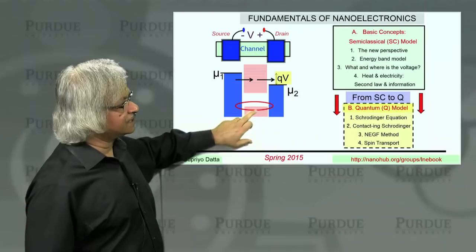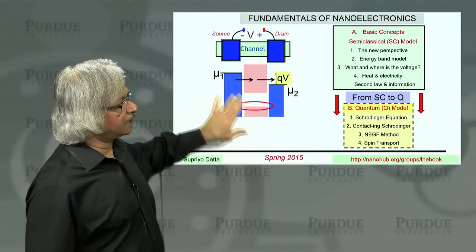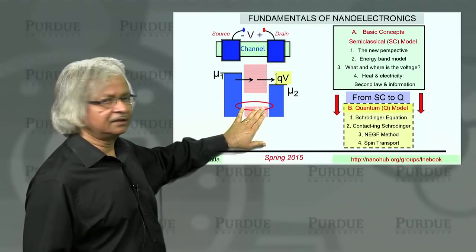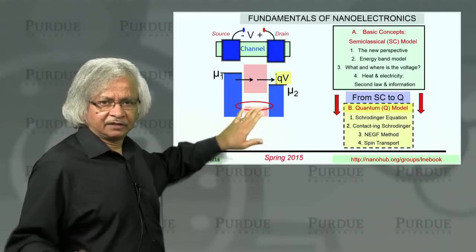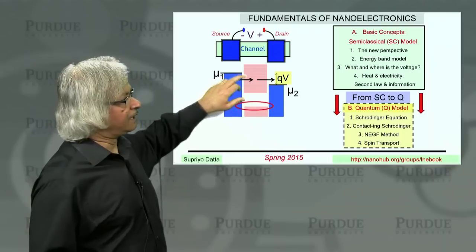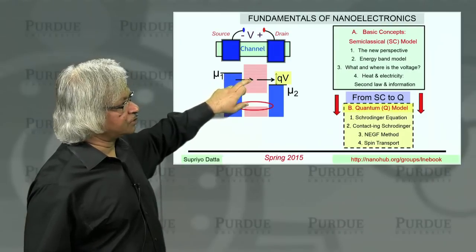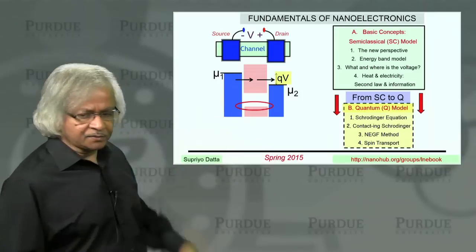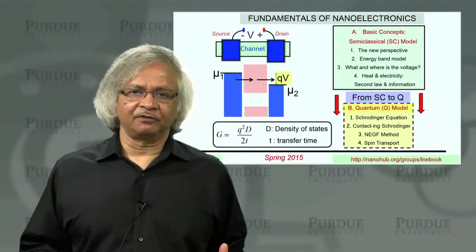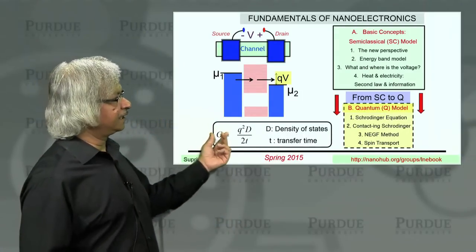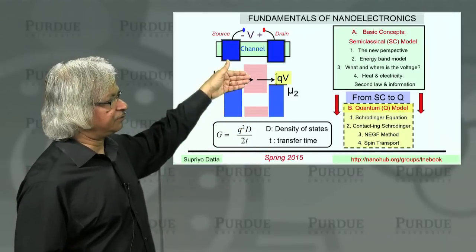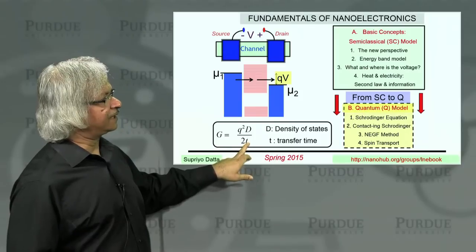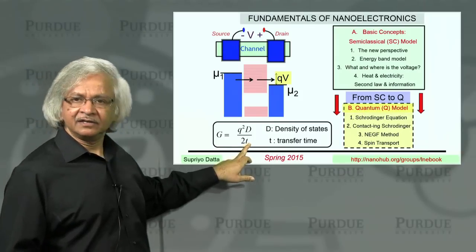When you consider these levels, this contact wants to keep them filled, that contact wants to keep them filled, and so they just stay filled. Nothing else happens. Whereas up here, this contact wants to fill it up, this contact wants to empty it. So from this point of view, we obtain this expression for conductance, relating it to the density of states around the Fermi energy, around this electrochemical potential, and the time that an electron spends inside the channel.